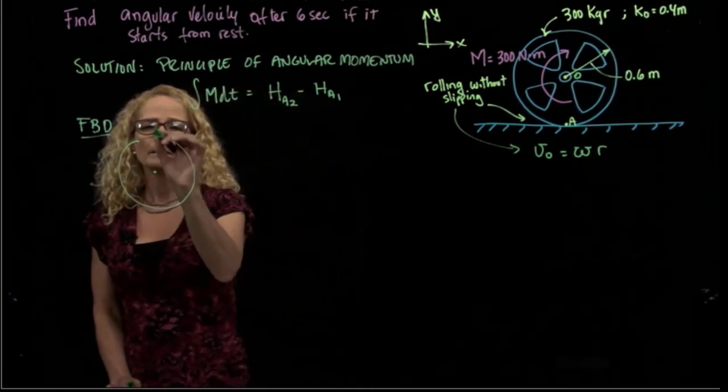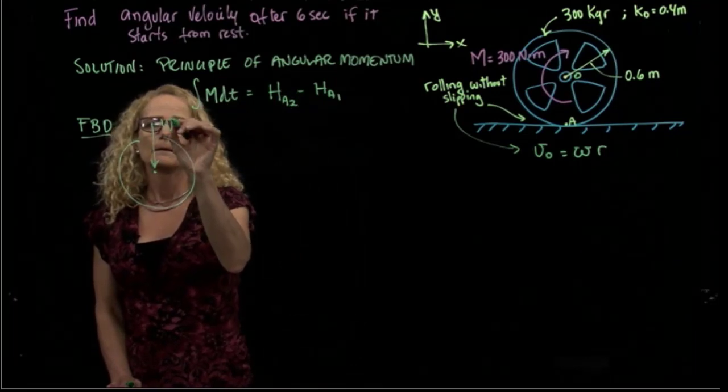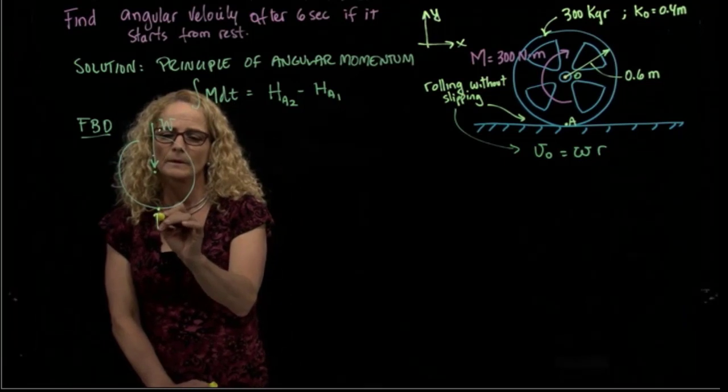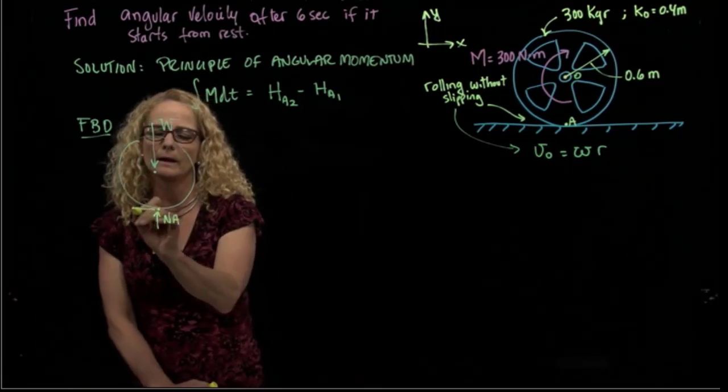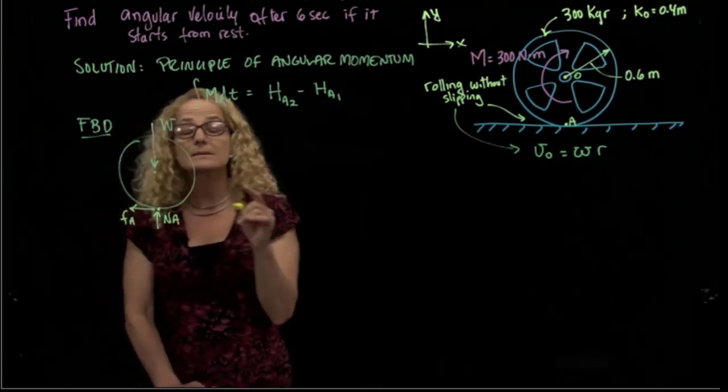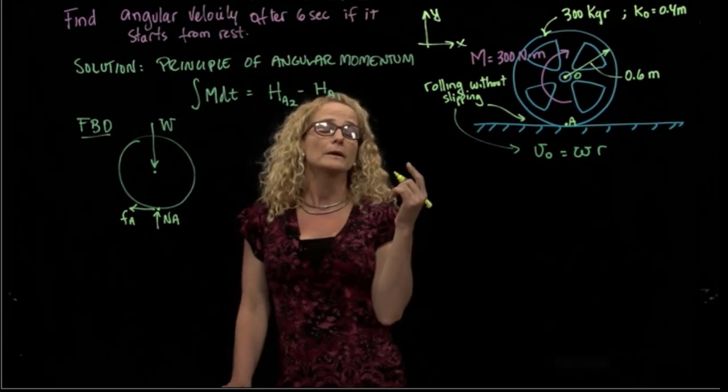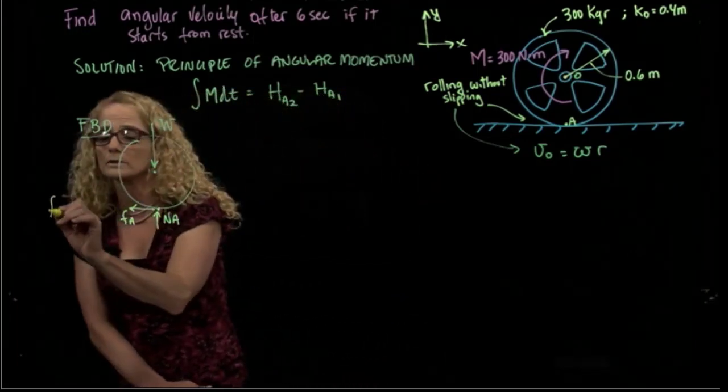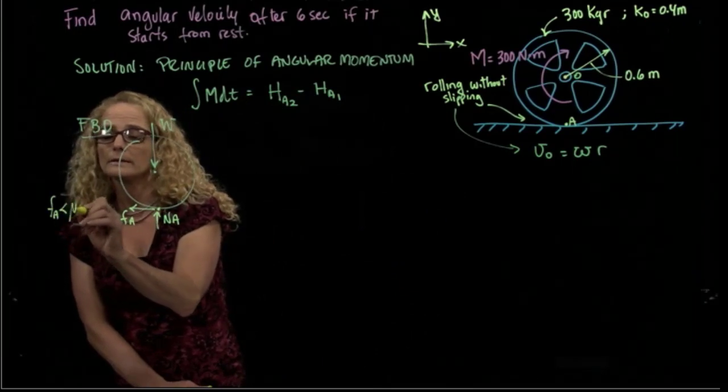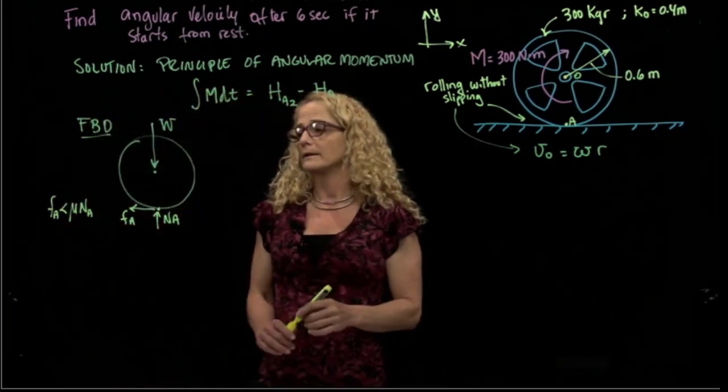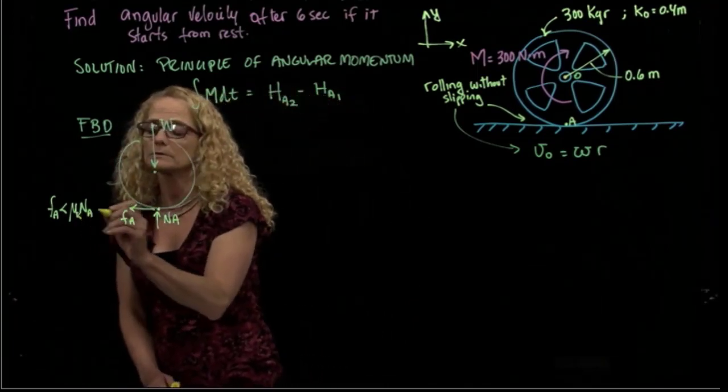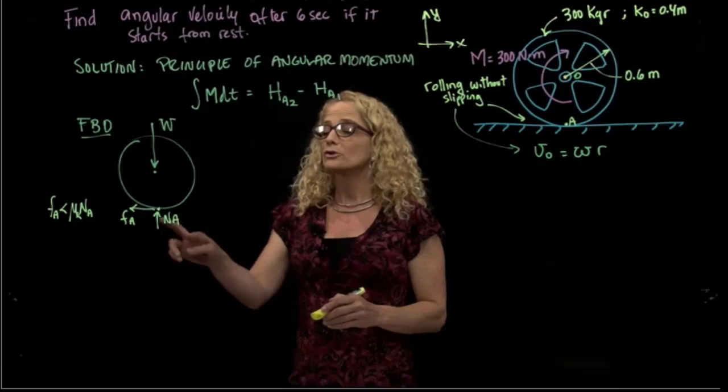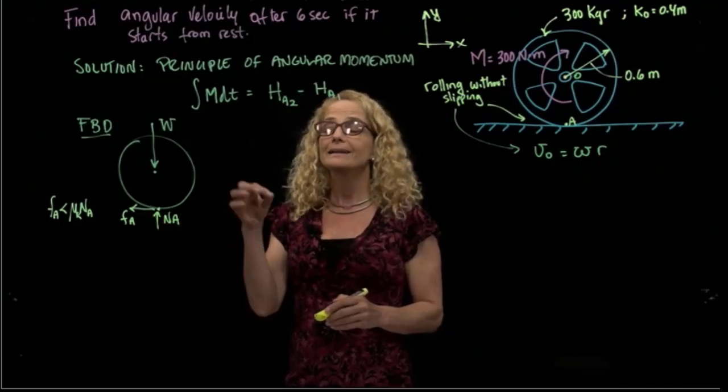Then we have two forces in A: N_A and F_A. Please remember that since we have the condition rolling without slipping, we cannot relate those two forces. We only know that this force is less than a kinetic coefficient of friction times the normal, but we don't know how much less. So those two variables are independent.